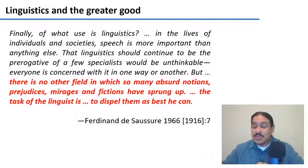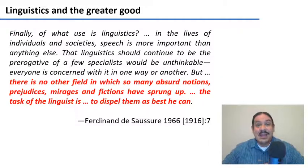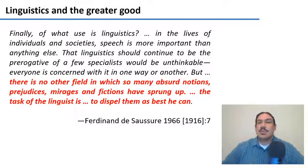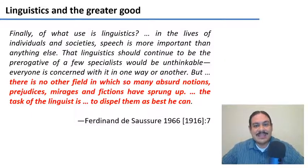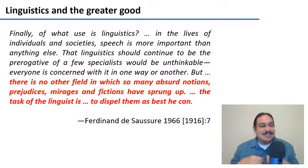This quote is from Ferdinand de Saussure, who proposed the difference between signifier and signified. Linguistics is very unique, and there's no other field in which there are so many absurd notions, prejudices, mirages, and fictions — and the task of the linguist might be to dispel them as best as they can. We saw that just now: saying that Creole is just bad English, English with a bad accent, is not true. It's part of our work to dispel those myths and to make sure that people have access to their human rights — proper defenses in court and so forth.